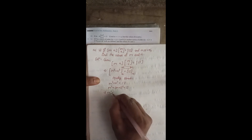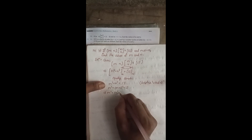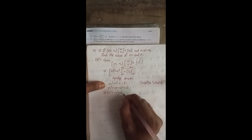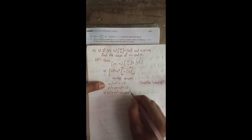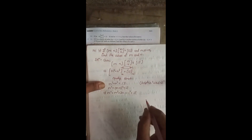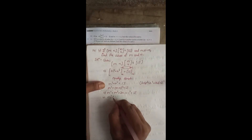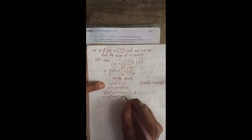Now expanding: M² plus (M+1)² using the formula (a+b)² equals a² plus 2ab plus b². So this becomes M² plus M² plus 2×M×1 plus 1² equals 13, which gives M² plus M² plus 2M plus 1 equals 13.